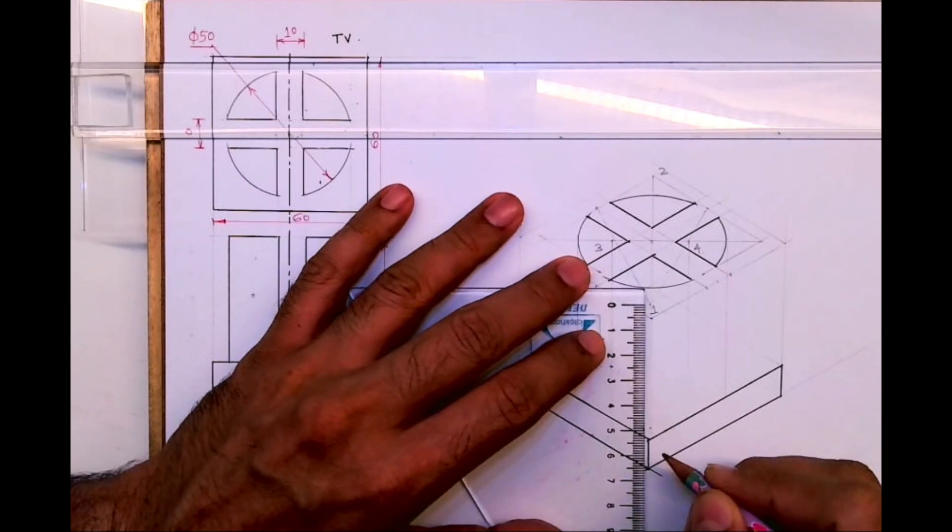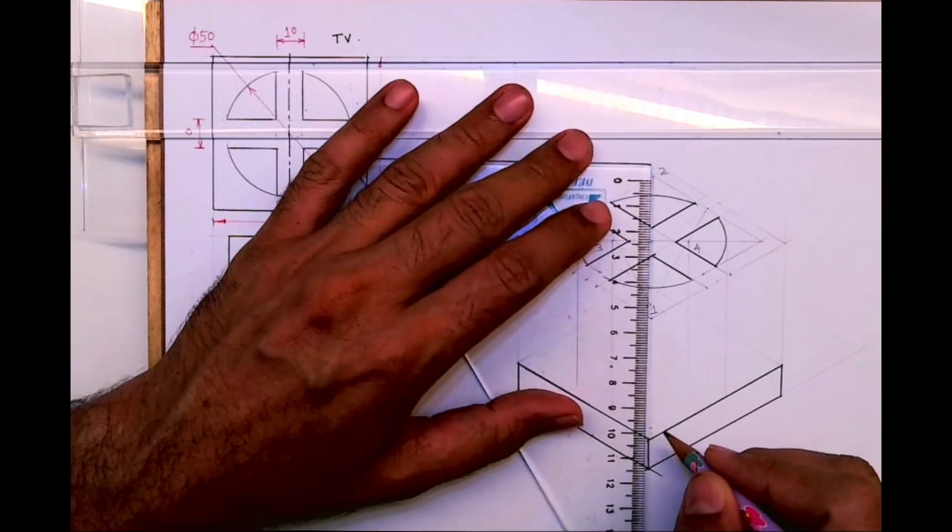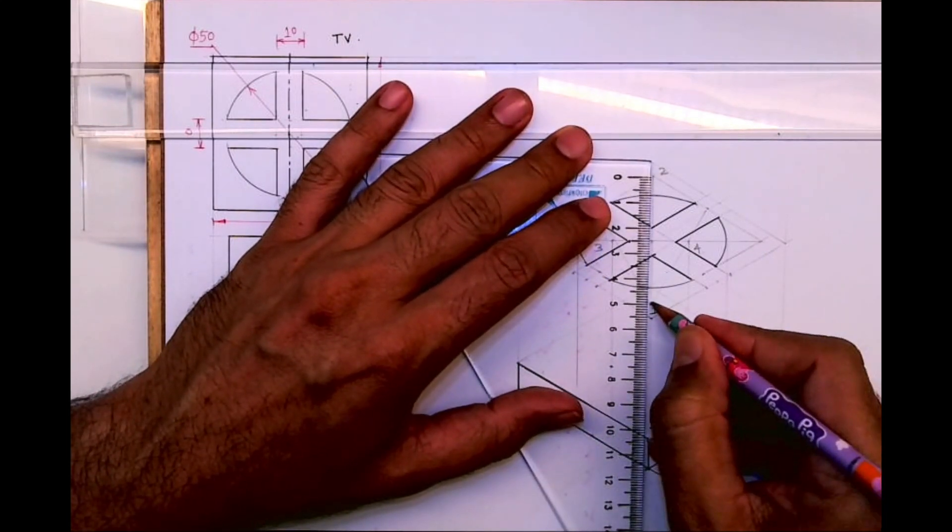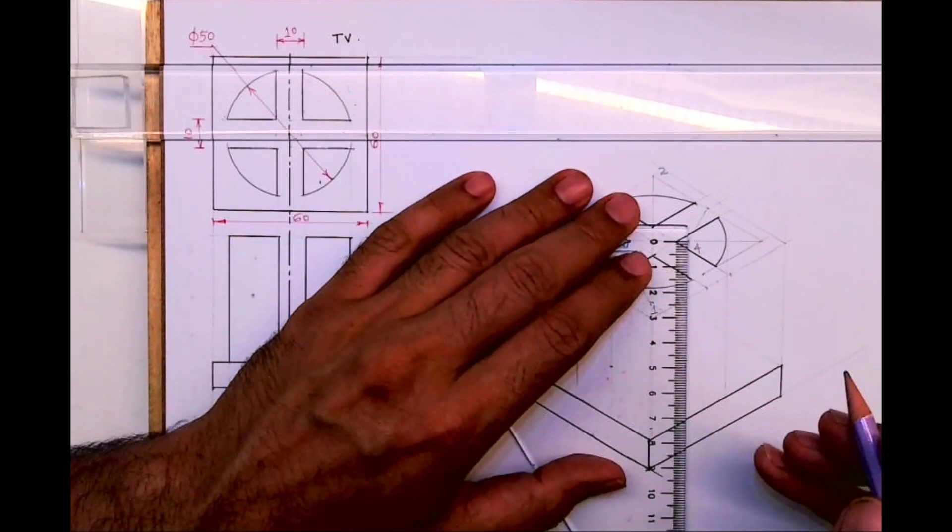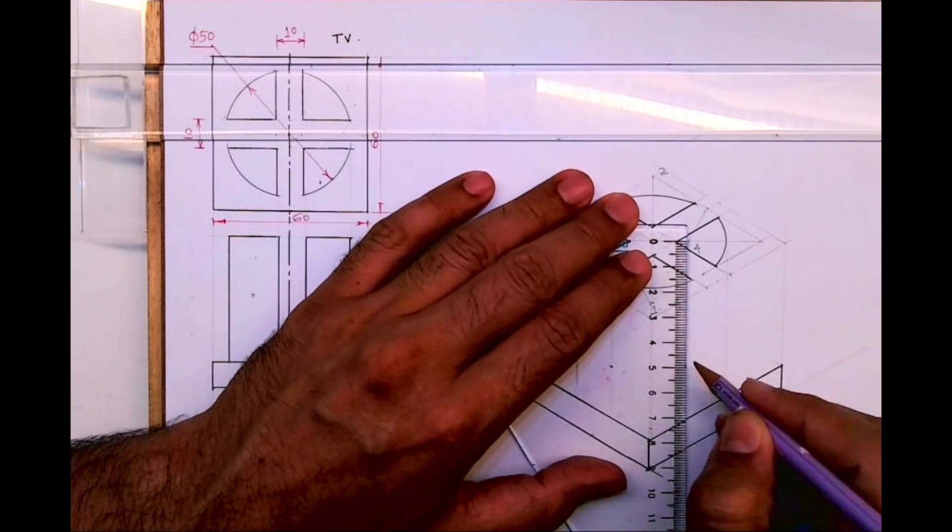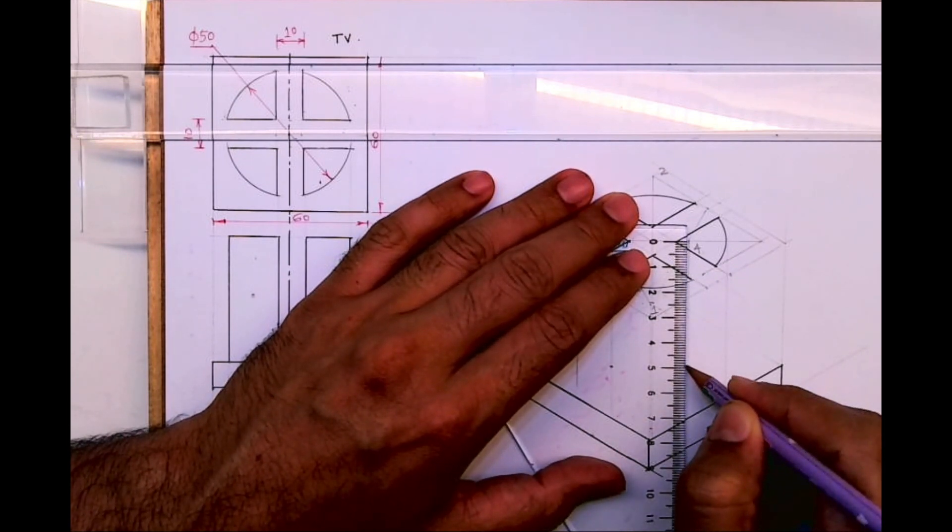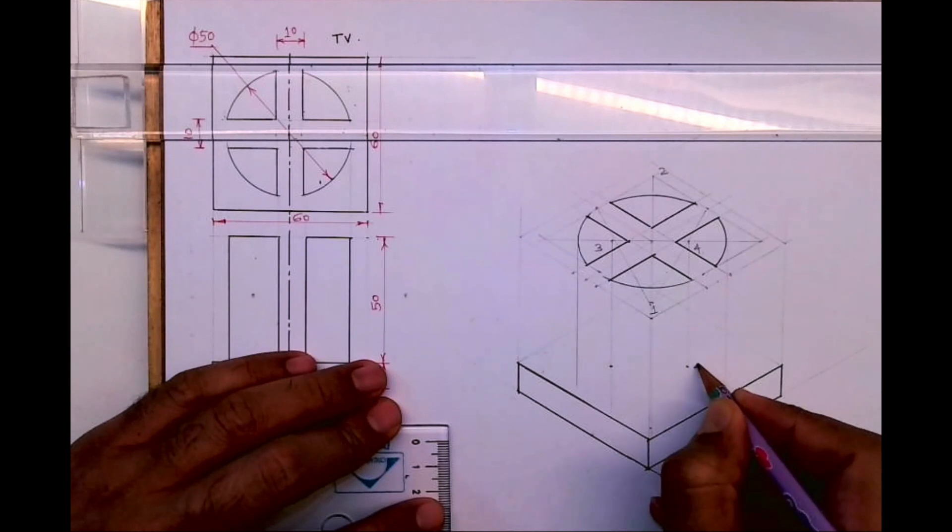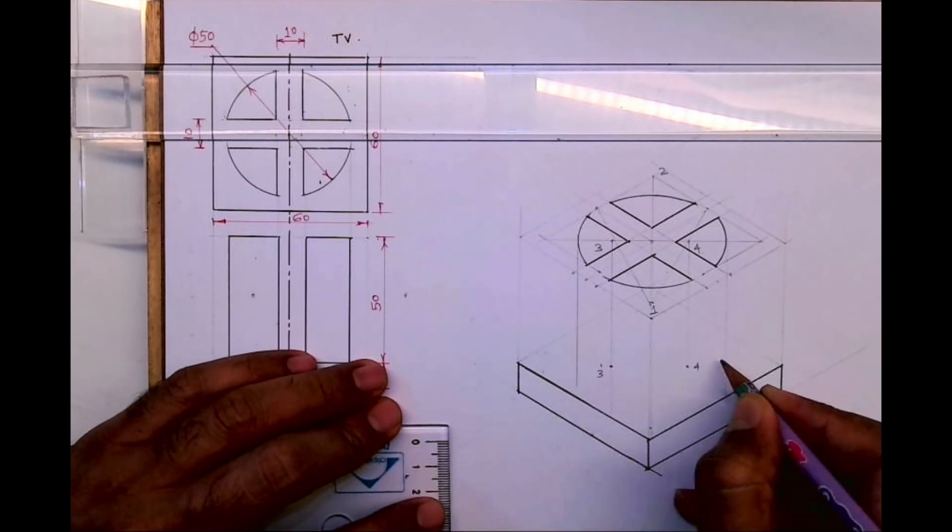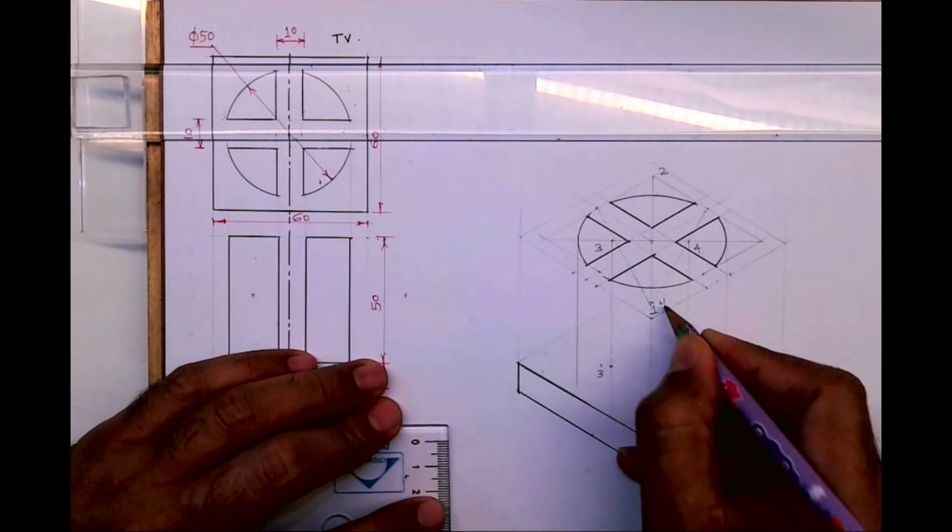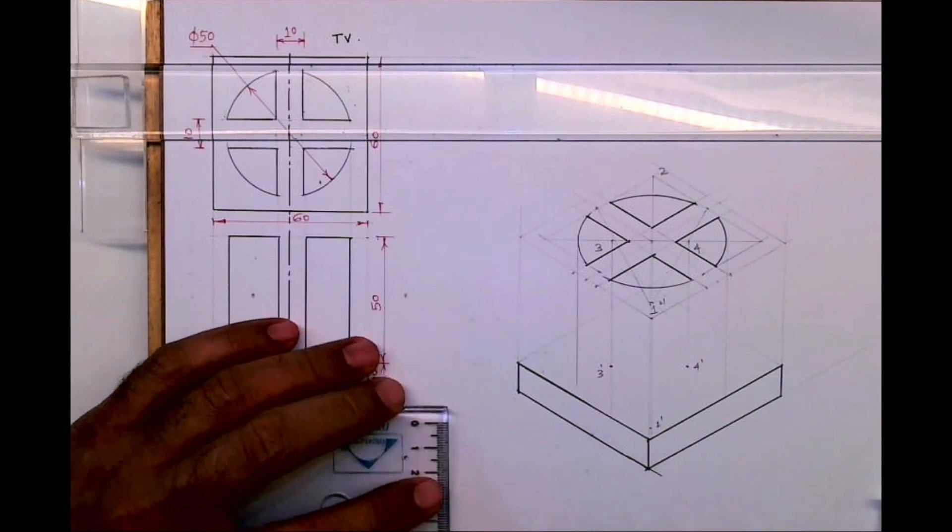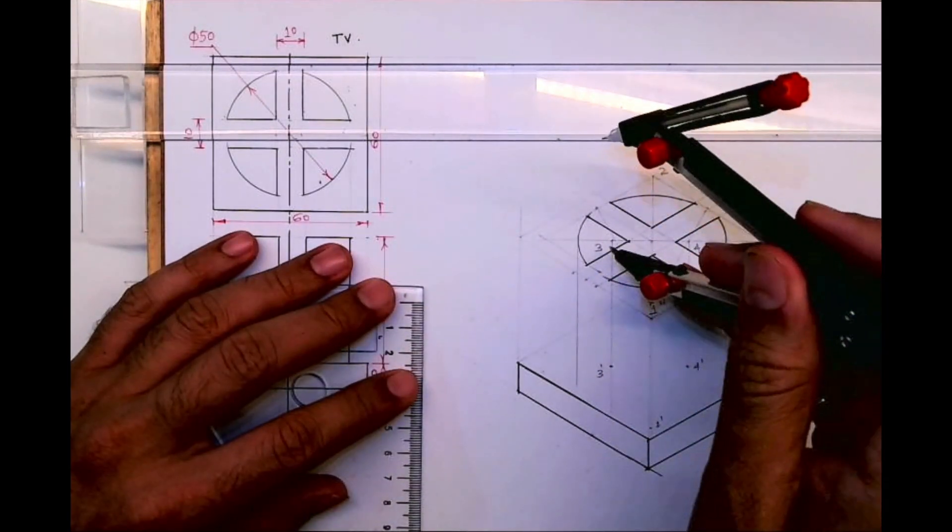So I'm marking all the points down by 50: 0.3 dash, four dash, two dash, one dash.